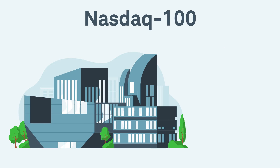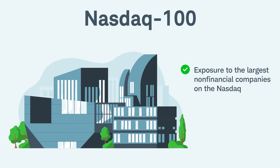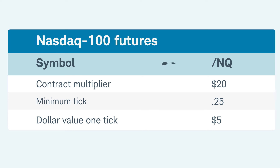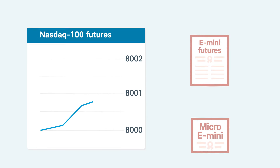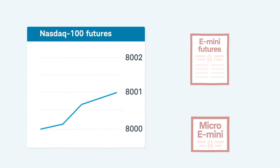Moving on, the Micro E-mini NASDAQ 100 contract provides exposure to the largest non-financial companies on the NASDAQ. Symbol /MNQ, this contract has a multiplier of $2 and a minimum tick of a quarter point, thus making its dollar value for one tick equal to $0.50. A full one-point move in the MNQ is equal to $2 versus $20 for the standard NQ contract.